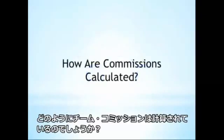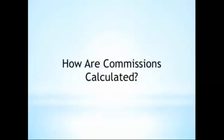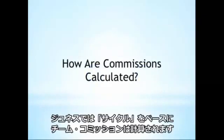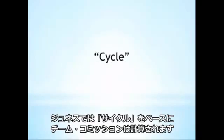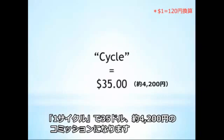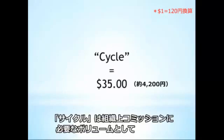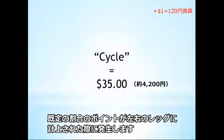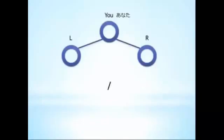So how are the commissions calculated? In Jeunesse, the most basic unit of commissions is called a cycle. A single cycle equals $35 in commissions. A cycle is generated every time the right ratio of commissionable volume is achieved in the binary structure.